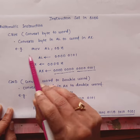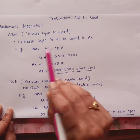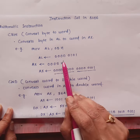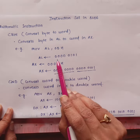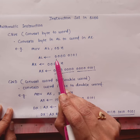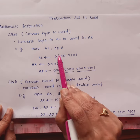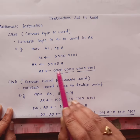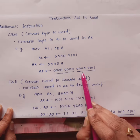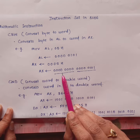For example, 05h is moved to the AL register with a MOV instruction. If we write 05h in binary, the MSB is 0, which denotes that this operand is positive, and it can be copied to the AH register so that this byte from AL will be extended to a word.